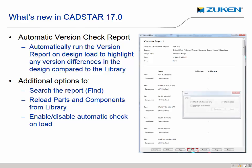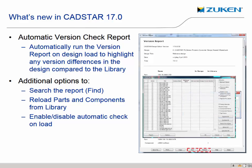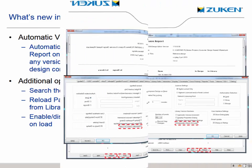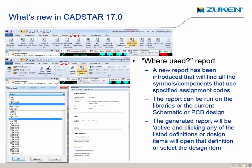There are several reporting enhancements, such as when opening a design you have the option to automatically display a version check report. This can further allow you to reload all out-of-date parts so that your design is in sync with your libraries before you start any modifications. A new where-used report has been introduced that will find all of the symbols or components that use specified assignment codes. The report can be run on either the libraries or the current schematic or PCB design.